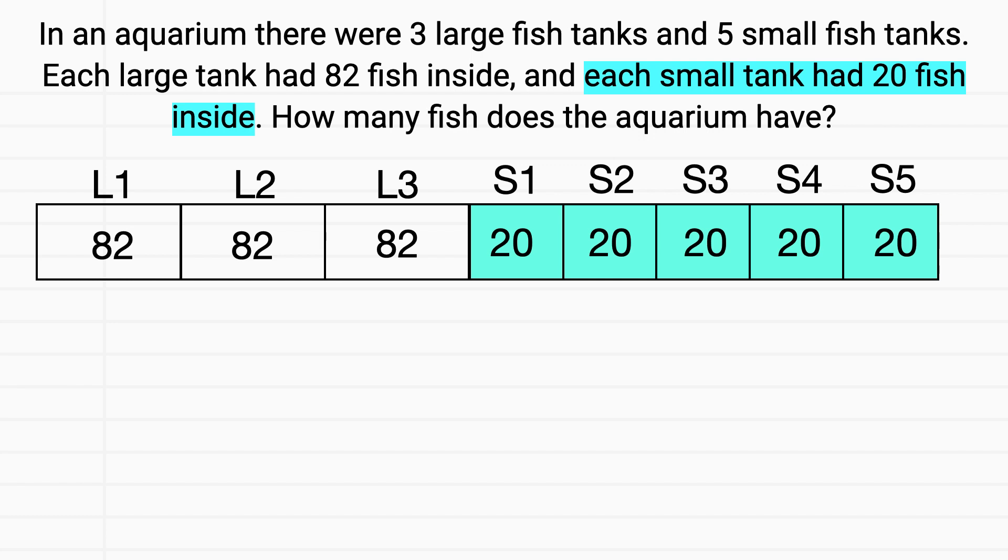Now, to find the total number of fish in this aquarium, let's first think about our large tanks. What math expression could I write to find the total number of fish in the large tanks? Well, I have 3 tanks, and each one has 82 fish in it. I would multiply 3 times 82.